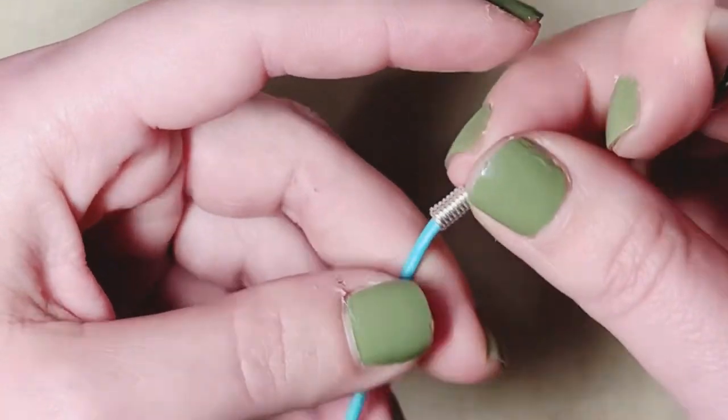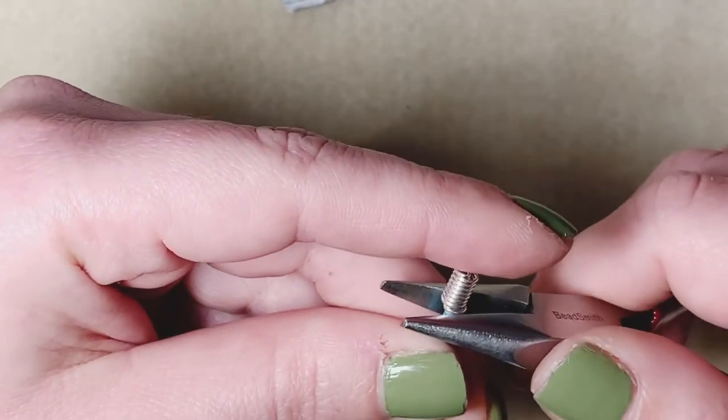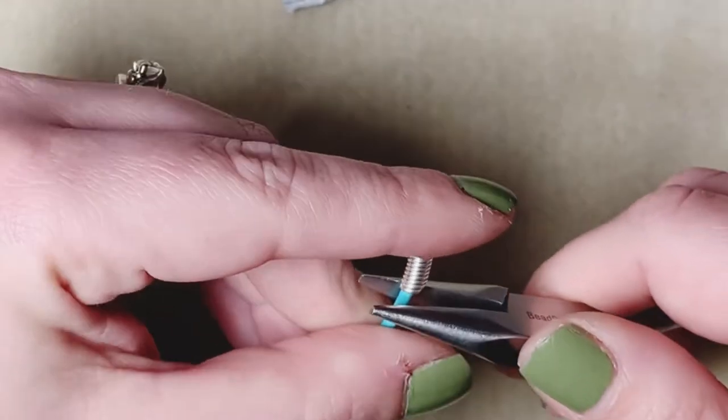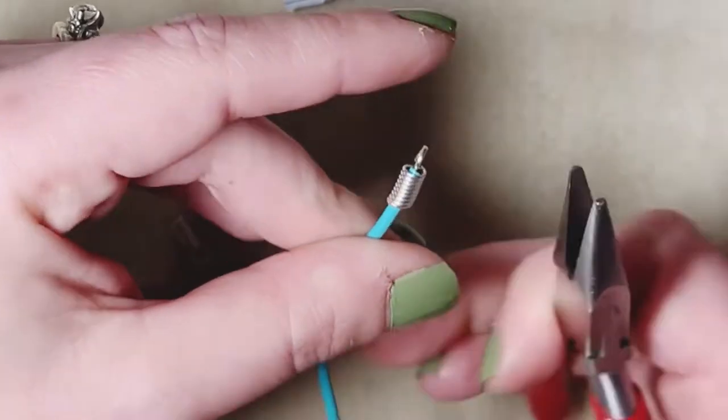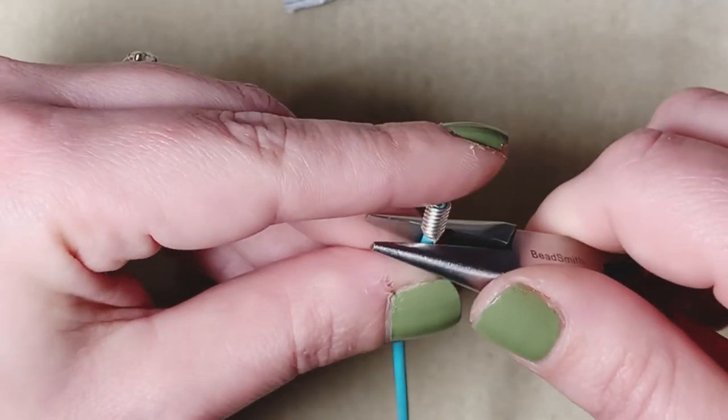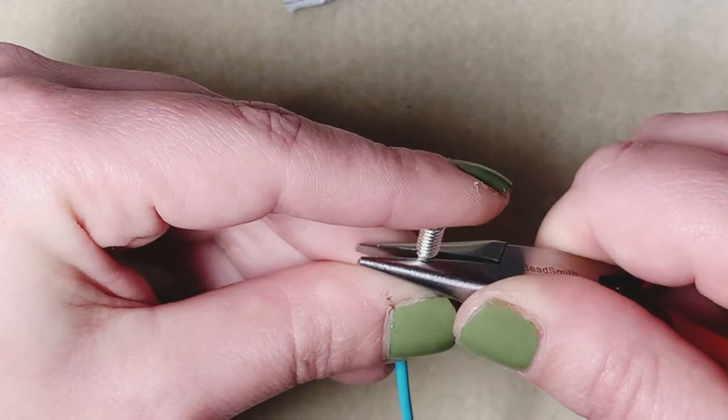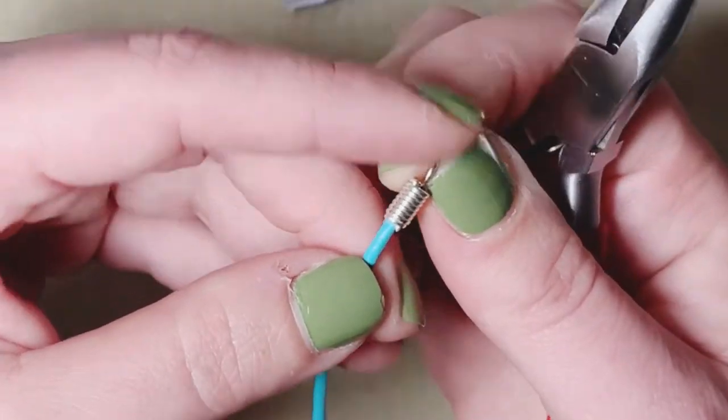So you can see I kind of push it down and then turn it around and I kind of see if things are looking a little out of whack I kind of push them all around. But basically what you want to do is squish down just the very last coil onto the cord.